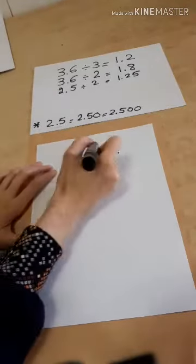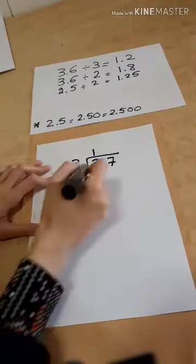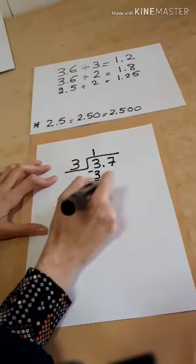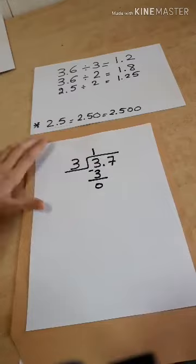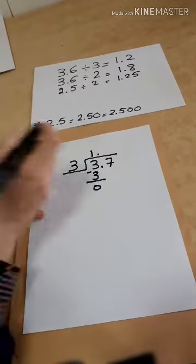3 divided by 3 is 1. 1 times 3 is 3. I subtract, it says zero. Once I arrive to the point, directly I put it in the quotient. I put the 7 down.